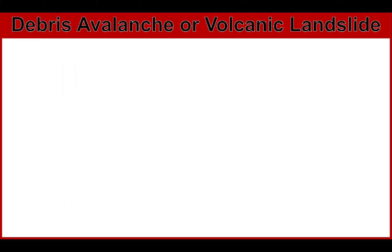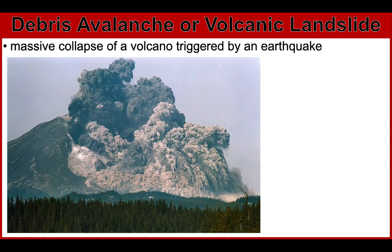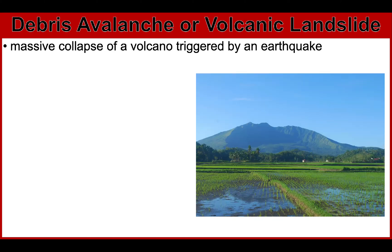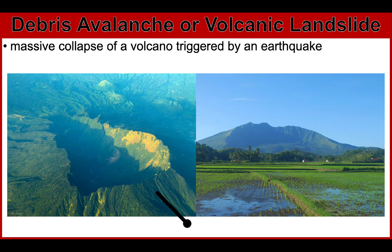The next hazard is debris avalanche, or volcanic landslide. This is a massive collapse of a volcano, usually triggered by an earthquake or volcanic eruption. An example of a recent debris avalanche occurred during the 1980 eruption of Mount St. Helens. In the Philippines, we have volcanoes such as Iriga volcano in Camarines Sur and the Banahao volcano in Quezon province, which had prehistoric debris avalanche events. A huge volcanic debris avalanche typically leaves an amphitheater-like feature at the base of the volcano, as you can see here.